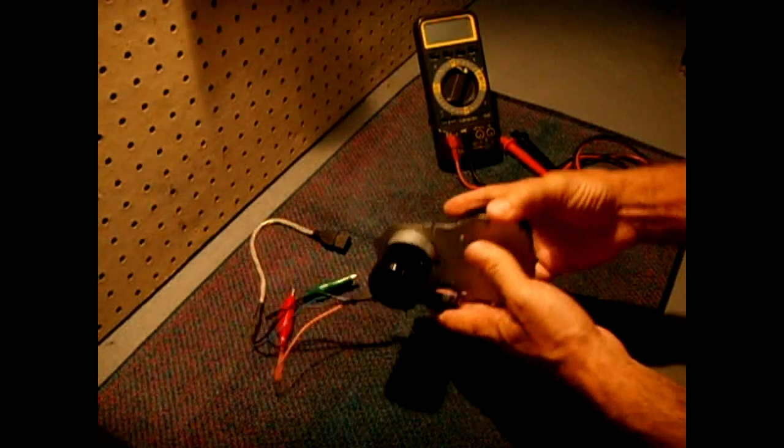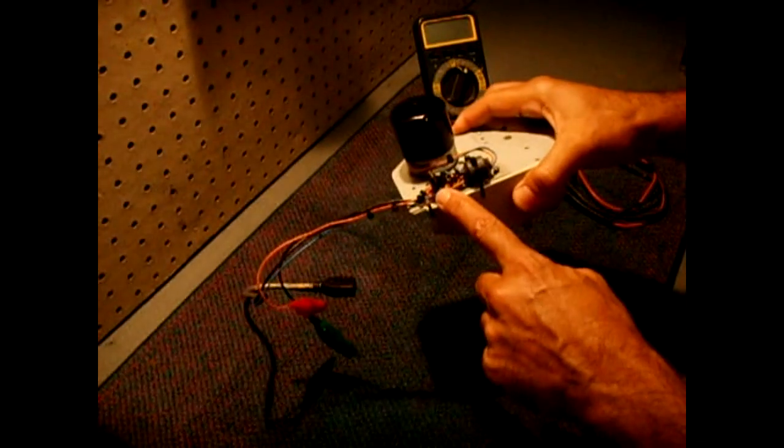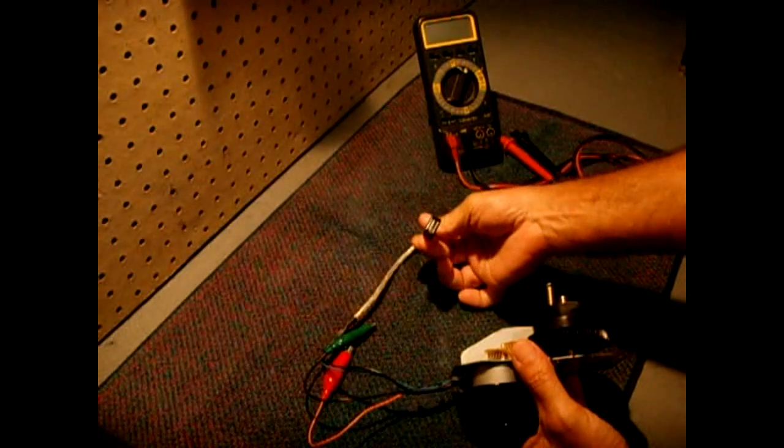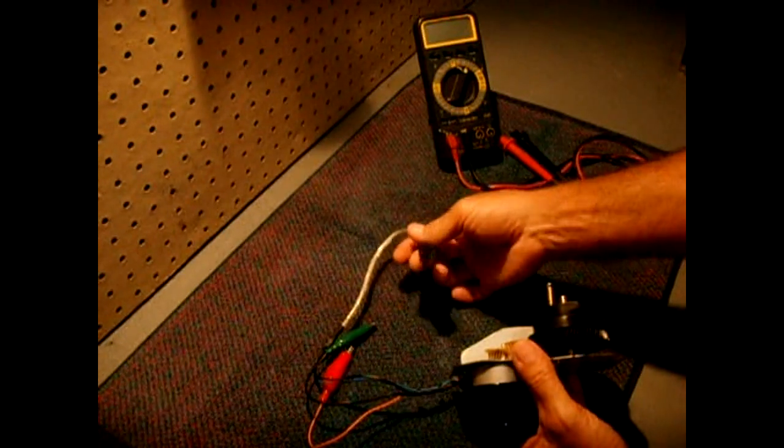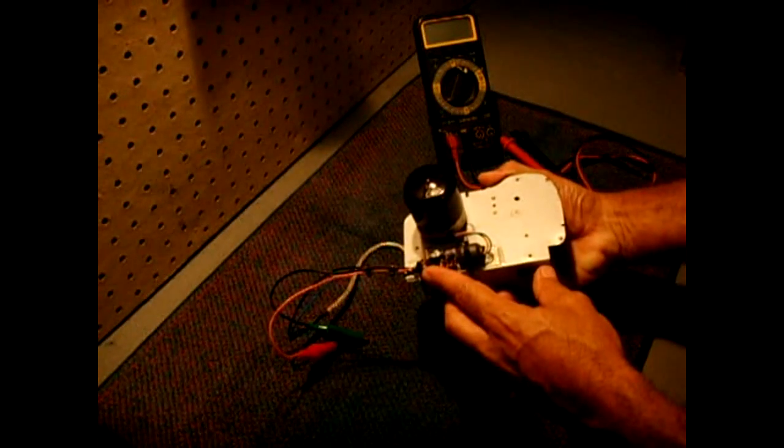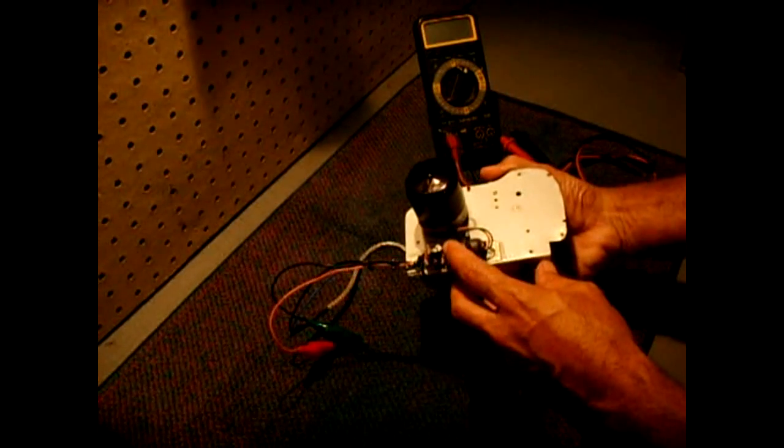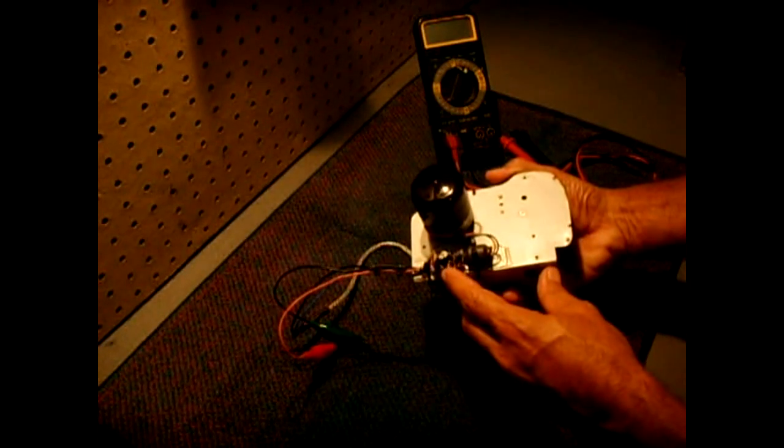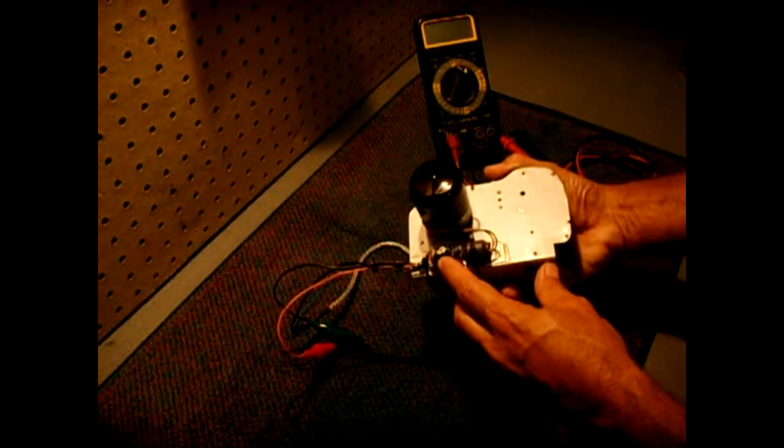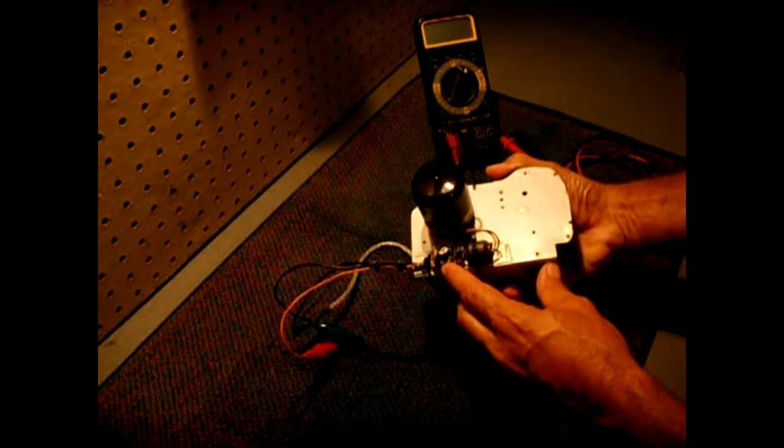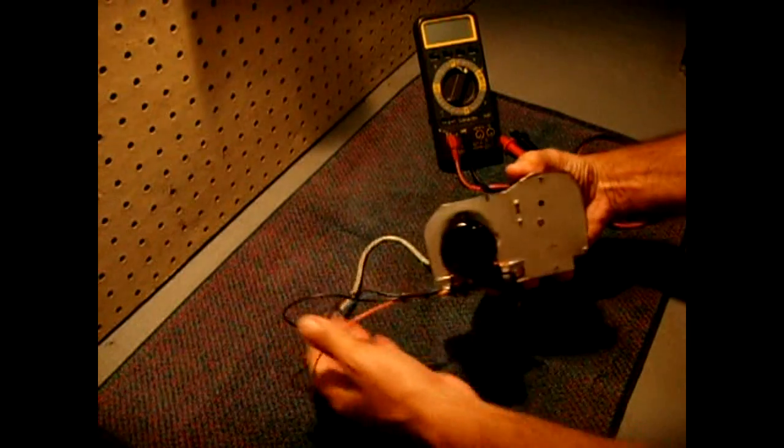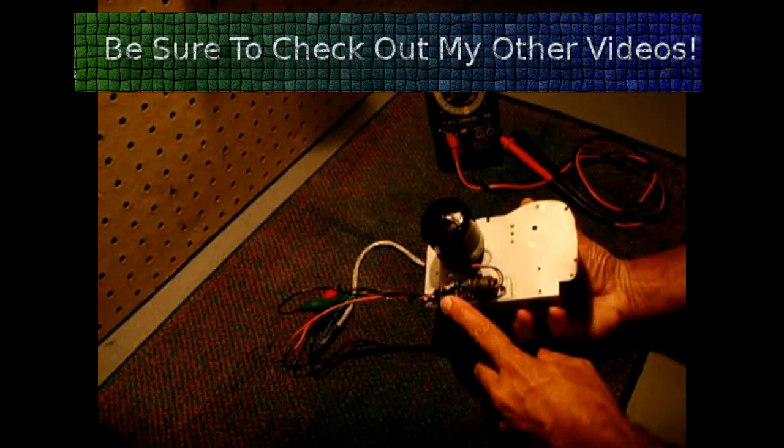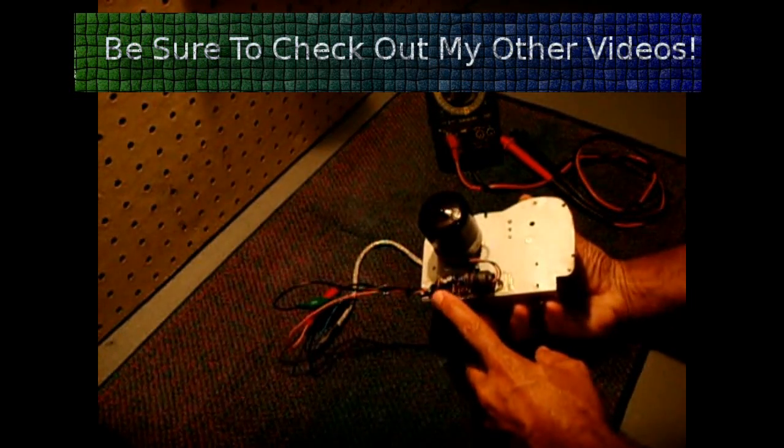I also added a 5 volt regulated output. Now right over here I have a USB connector which puts out a regulated 5 volts using the LM7805 IC. I have a 100 microfarad 16 volt on the input side of the LM7805 and I have a 22 microfarad on the output side of the 7805.